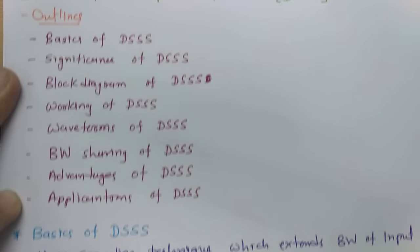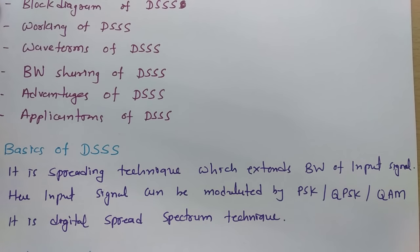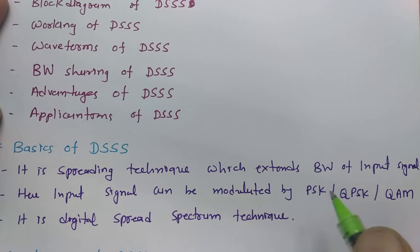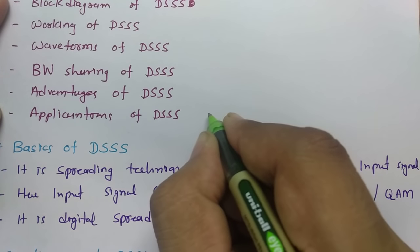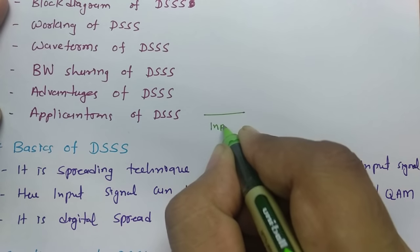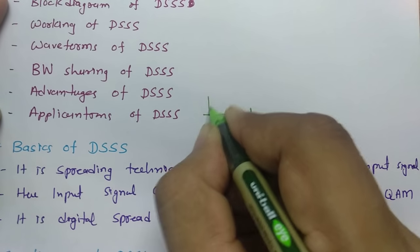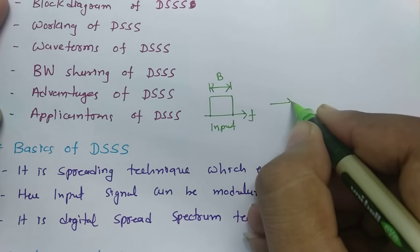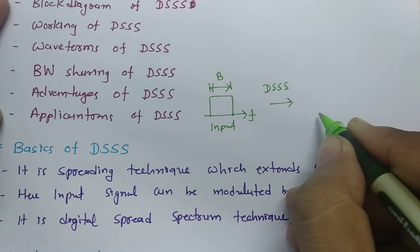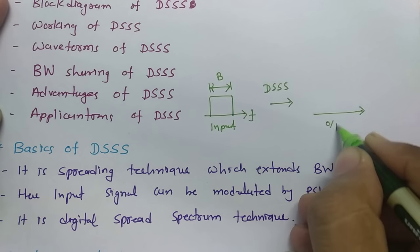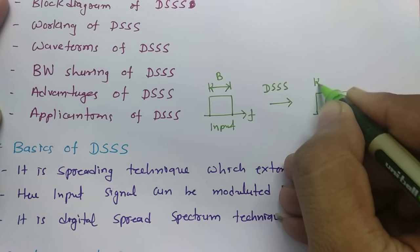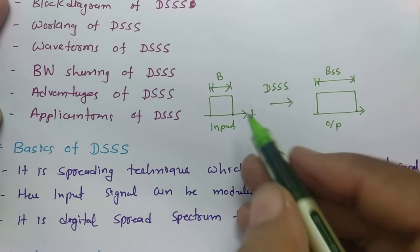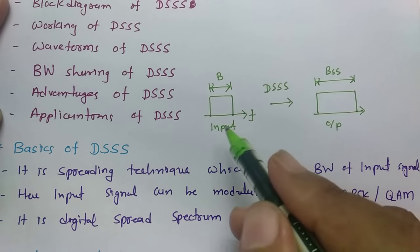Let us begin with the Basics of DSSS. It is a spreading technique which extends the bandwidth of the input signal. If we have an input signal with bandwidth B, after processing through a DSSS system, the output bandwidth BSS will be very much larger than B. This is our ultimate agenda.